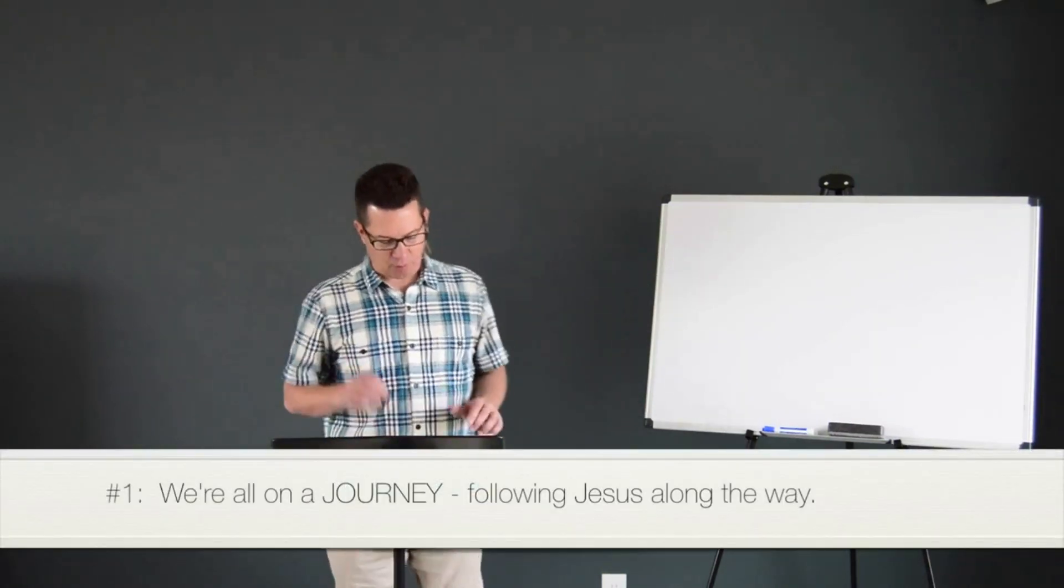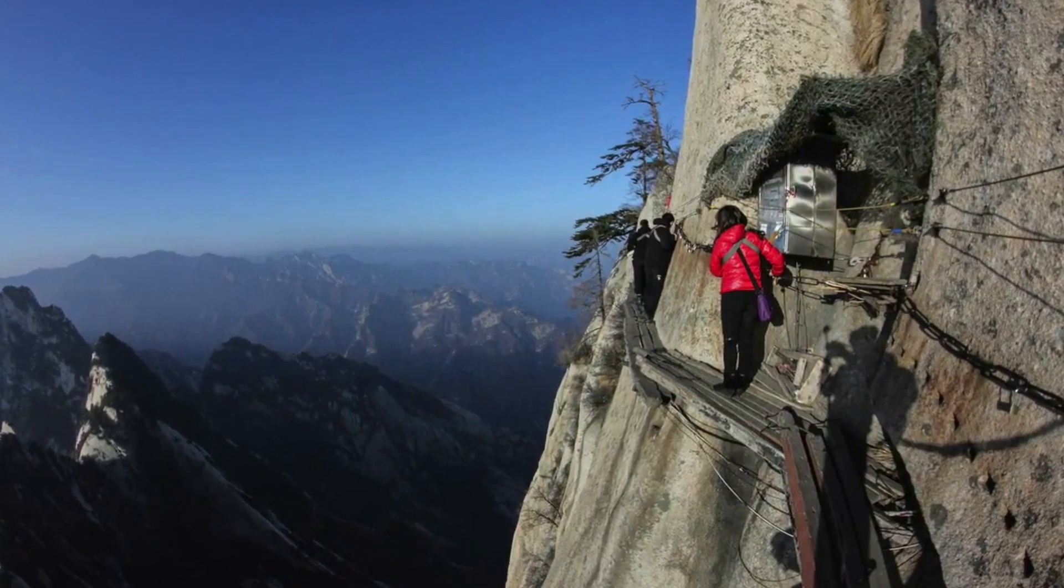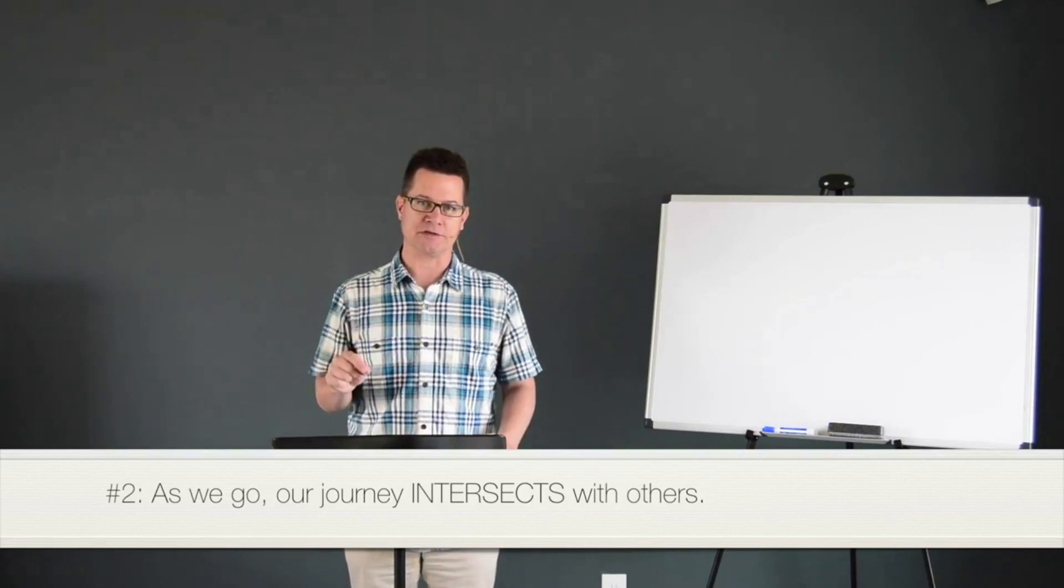So number one in your manual is that we're all on a journey following Jesus along the way. All of us are on the same journey if we're Jesus followers. Now the people around us are on their own journey. If they're not yet Jesus followers, they're on a completely different journey from the one that we're on. We're following the narrow path. Now the reality is following Jesus isn't like driving your car on I-19. It's more like a hike. Following Jesus is more like the Huashan Trail, the most dangerous hike in the world in China. So imagine for a moment that you're following Jesus on this treacherous mountain hike. Other people's trails are all over the place, but sooner or later, they intersect with ours.